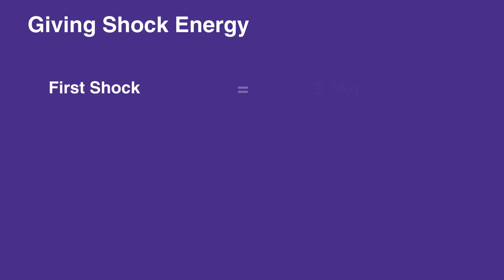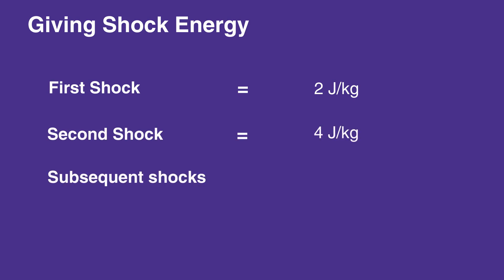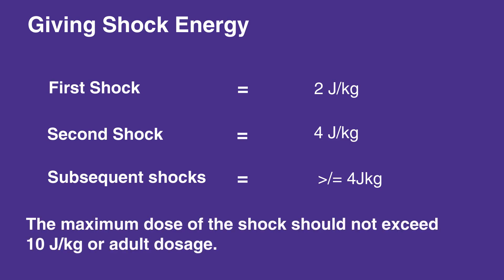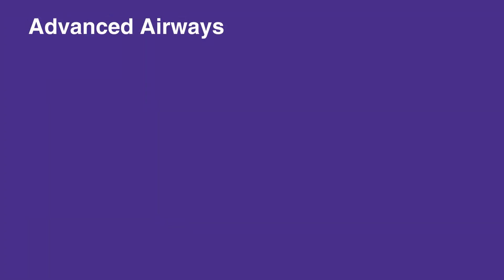When giving shock energy, the first shock should be 2 joules per kilogram. The second shock should be 4 joules per kilogram. Subsequent shocks should be greater than or equal to 4 joules per kilogram. The maximum dose should not exceed 10 joules per kilogram or adult dosage.